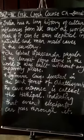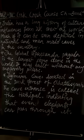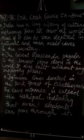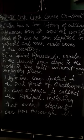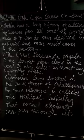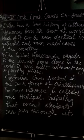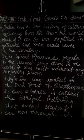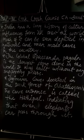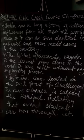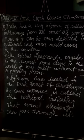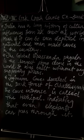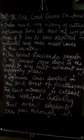The second point is Jogi Mara Caves. Jogi Mara Caves is located in the dense forest of Chhattisgarh, the 36th state of India, whose capital is Raipur. The cave entrance is called Hathi Pal.